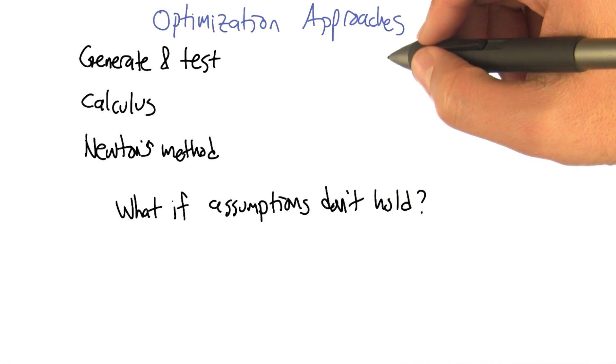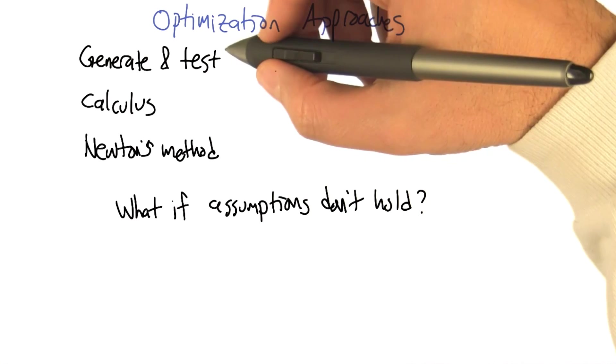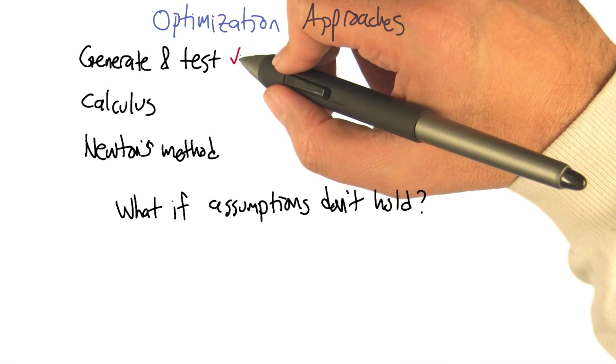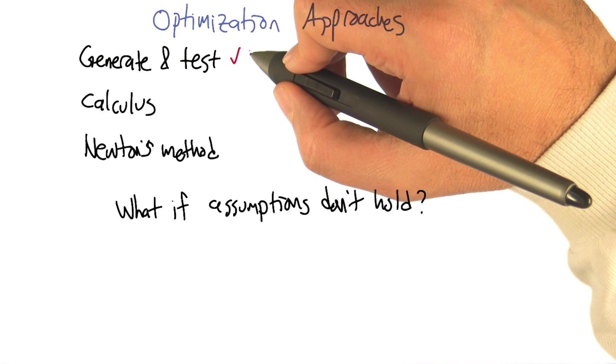So in terms of optimization approaches, we actually just looked at a couple different ideas. We just looked at generate and test, this sort of idea of you can just run through all the different values in the input space and see which one gives the maximum.